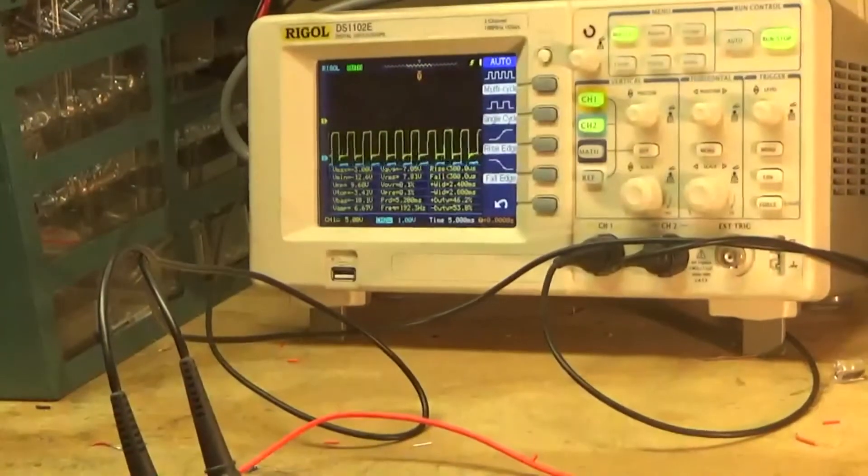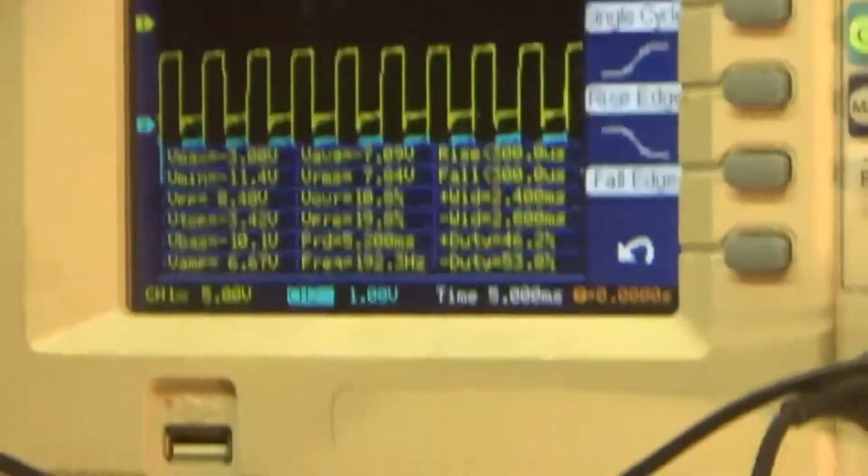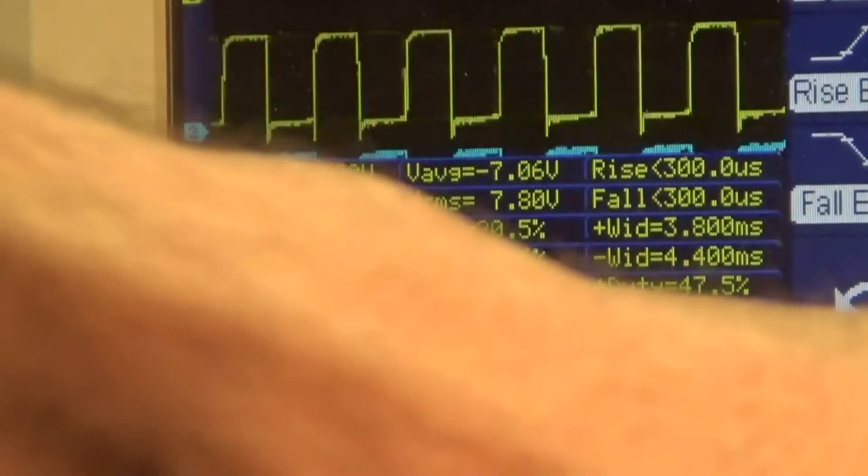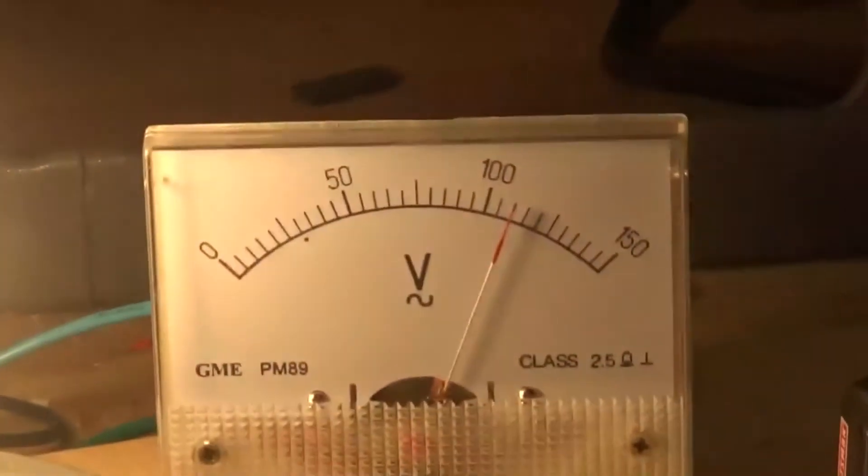Here it is on the oscilloscope. I'll adjust the potentiometer so you can see the frequency here. Slow it down a little bit to about 120, right there. The voltage. The light.